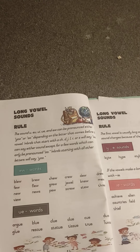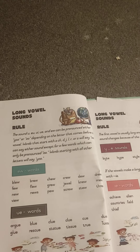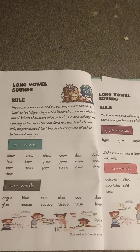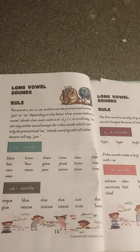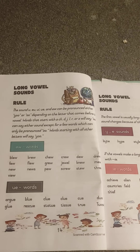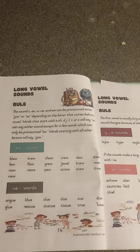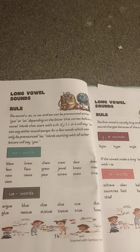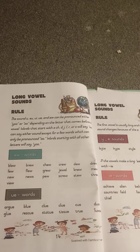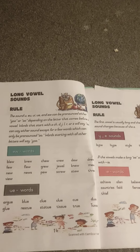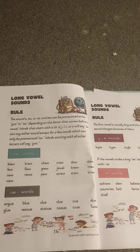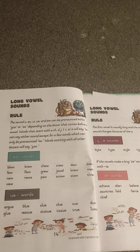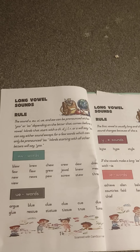Words starting with other letters say YOO. EW words: blue, brew, chew, crew, dew, drew, few, flew, grew, jewel, new, news, pew, screw, stew, through, view. UE words: argue, blue, clue, cue, dew, glue, rescue, statue, tissue, true.